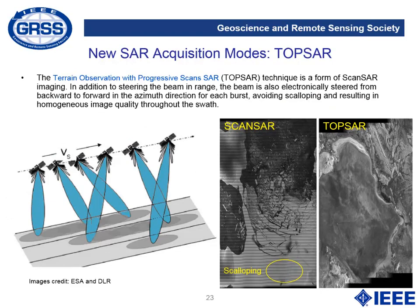Recently, a new mode has been implemented, for instance on the Sentinel satellite and TerraSAR-X — that is TOPSAR, Terrain Observation with Progressive Scans SAR. It is a form of ScanSAR imaging where, in addition to steering the beam in range, the beam is also electrically steered from backward to forward in the azimuth direction for each burst. The big advantage is that it avoids what is known as scalloping, which was a characteristic artifact of ScanSAR mode, resulting in better image quality.